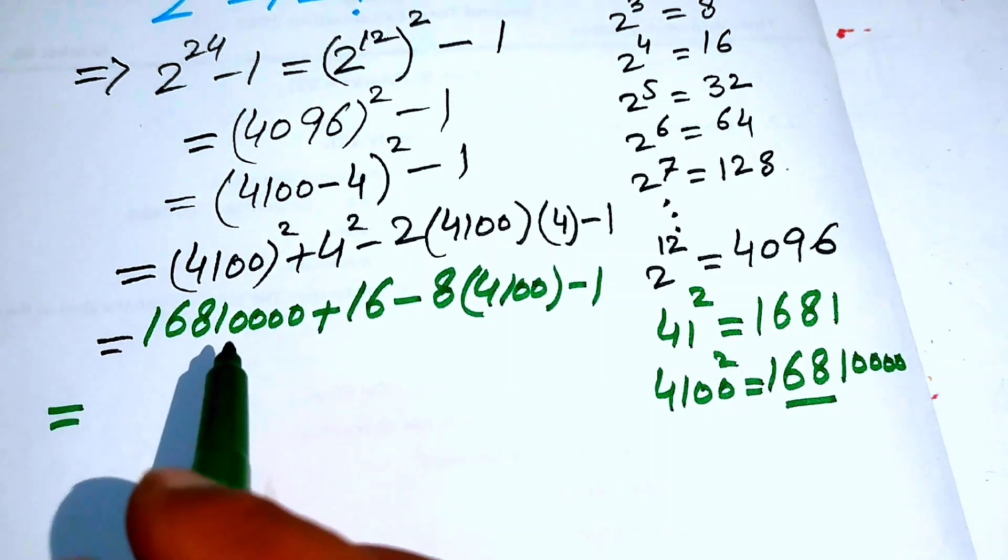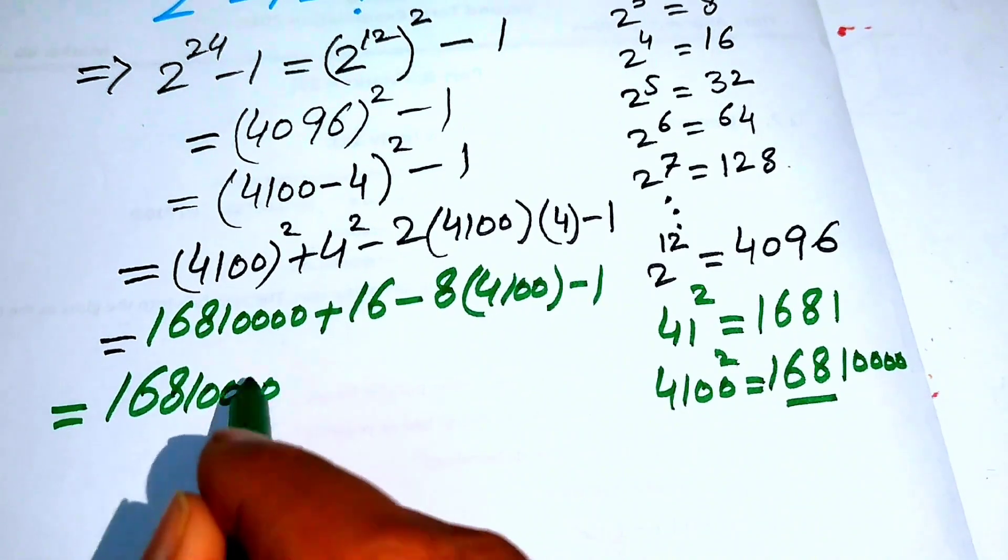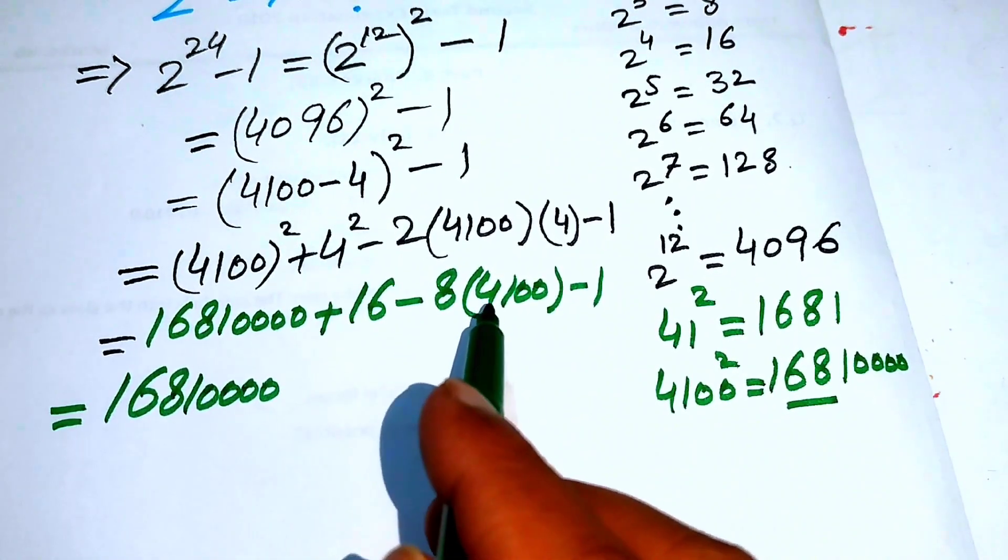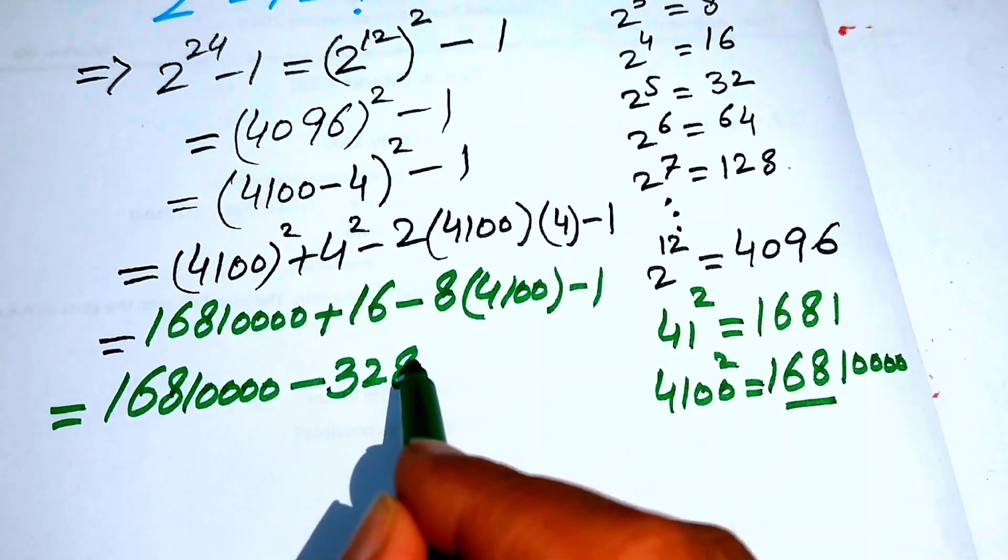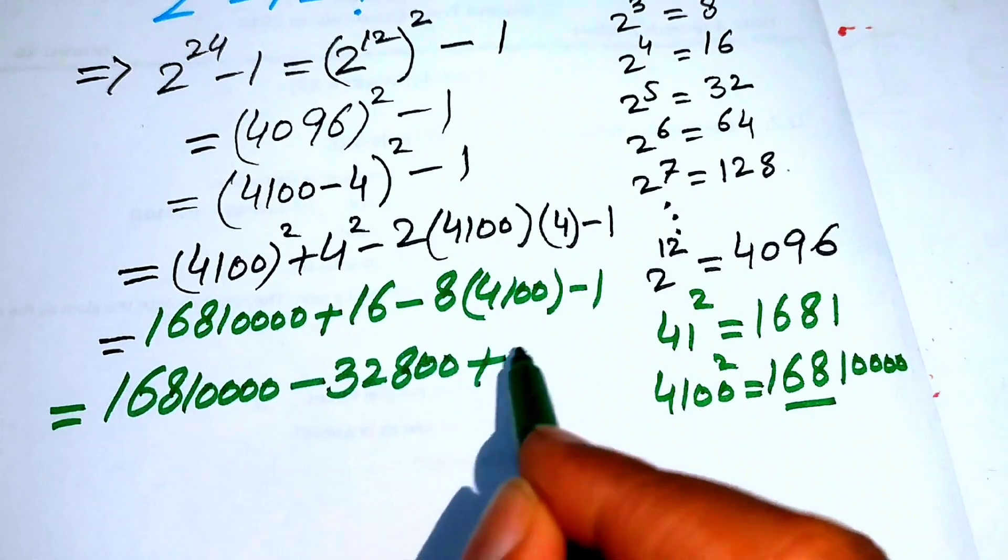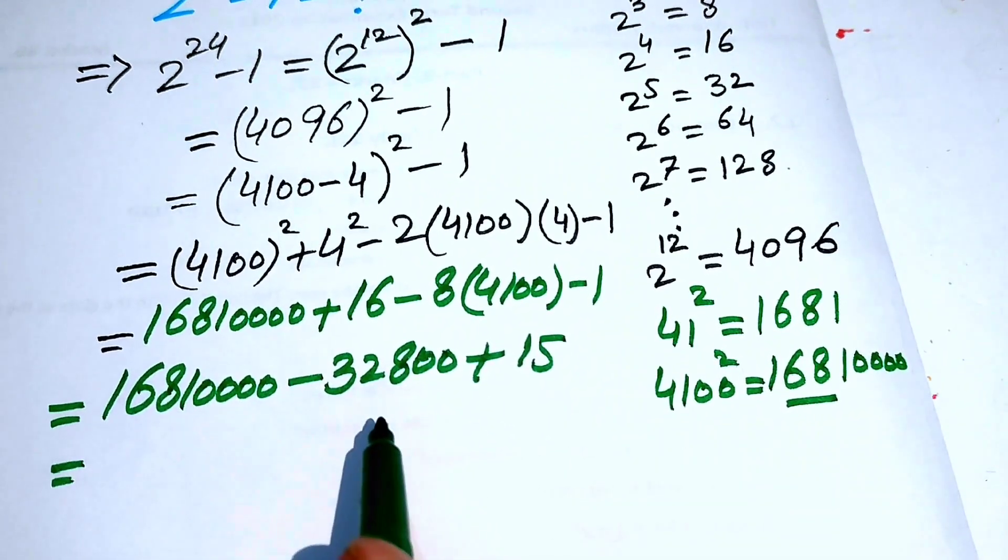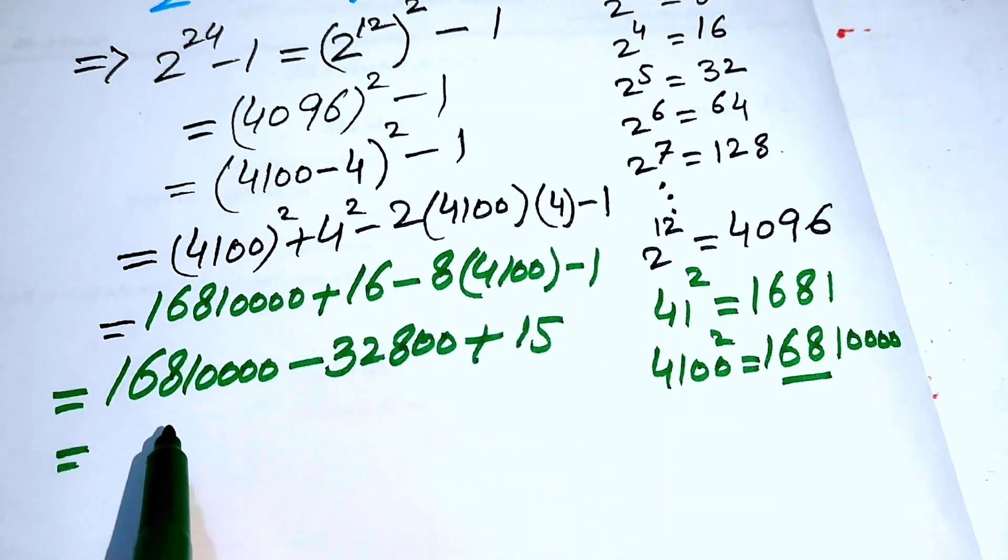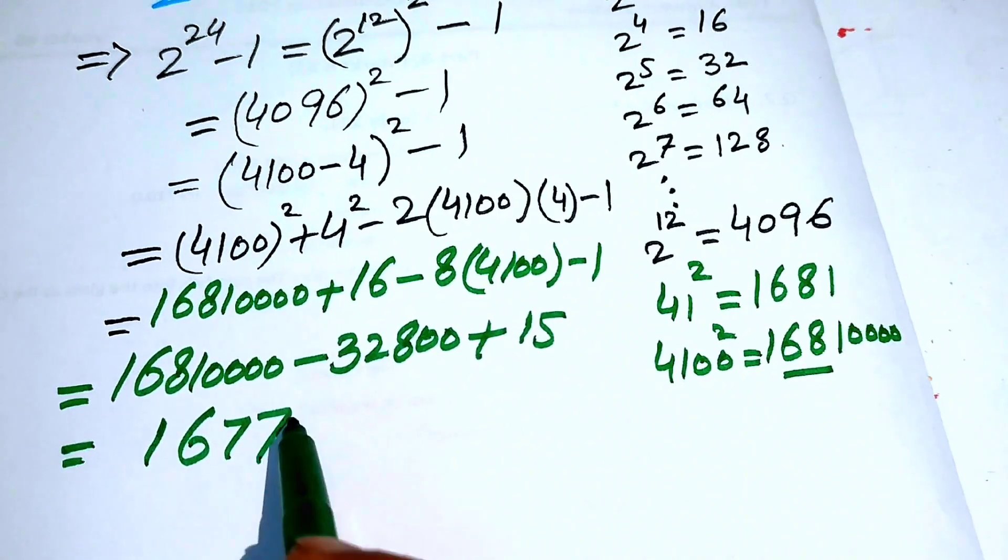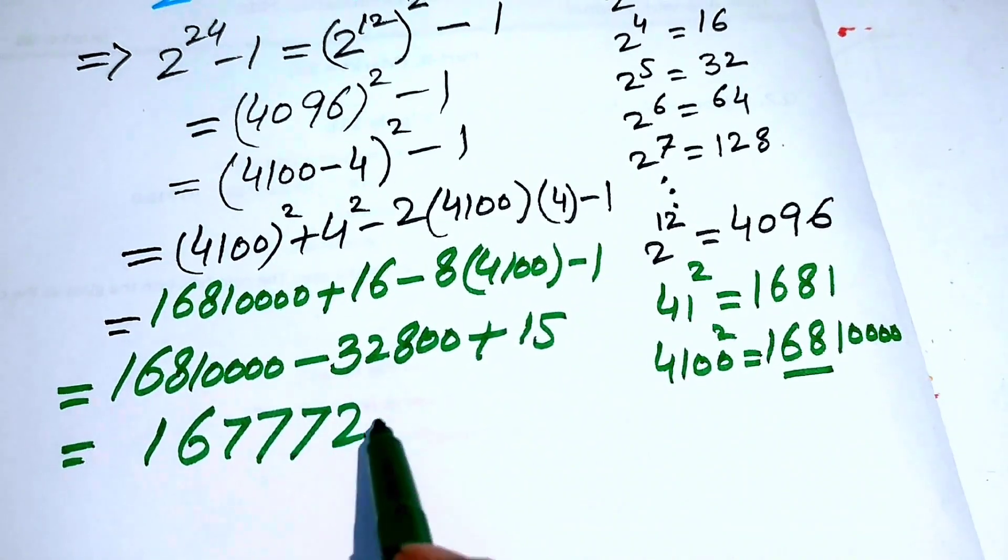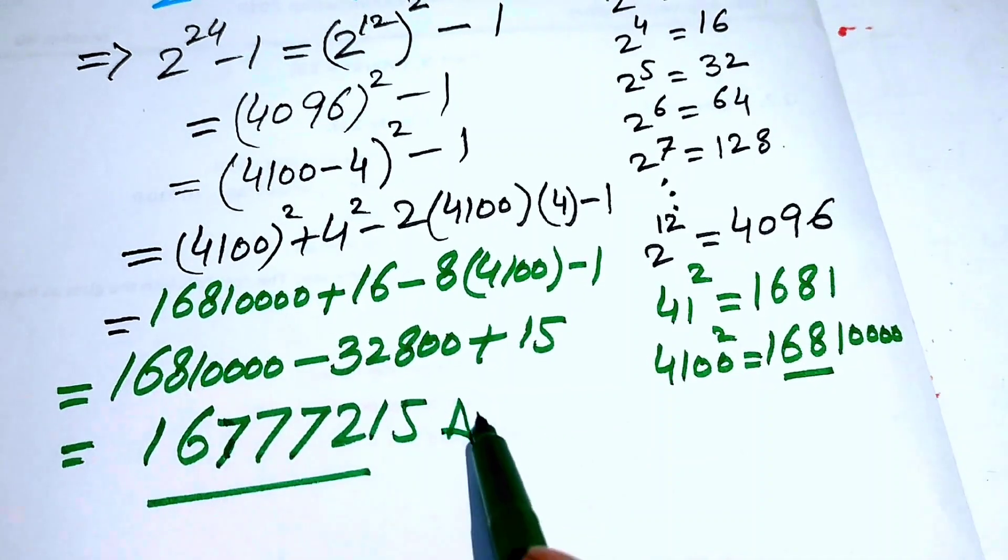We write it as 16810000, and here we multiply 8 times 41 and we get 328, so 32800. 16 minus 1 becomes 15, and when you subtract all these values, you easily get the exact answer of this value: 16777215. This is our final answer.